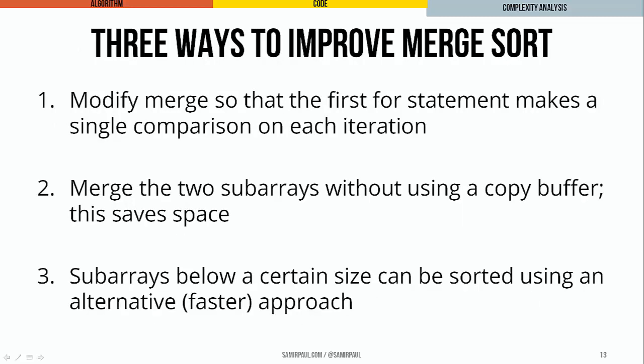One thing worth thinking about is how you might improve merge sort. You can modify merge so that the first for loop makes a single comparison on each iteration. There is also a somewhat complicated process that lets you merge two subarrays without using a copy buffer, which would alleviate the space constraints this algorithm places on us. Finally, for subarrays below a certain size, you might want to use a different sorting algorithm, particularly when thinking about the relative complexities of the two algorithms as they compare to merge sort for small n. That's it for today.